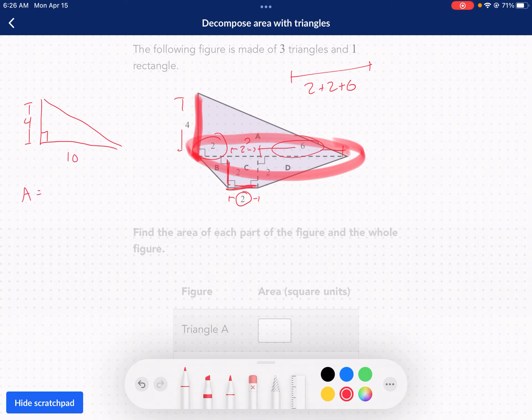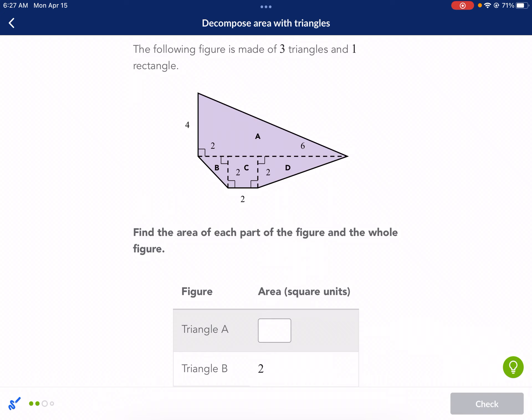If you add those up, you get ten for that distance. So, now I have area equals of my triangle. Base times height. That's supposed to be a triangle. Divide by two. That's ten times four. Divide by two. Forty divided by two. Twenty. So, I know triangle A is going to be twenty square units.